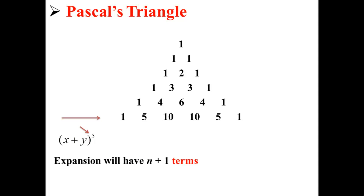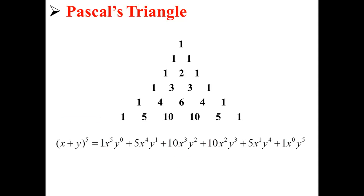Here we have x plus y to the fifth. That means we're going to start on the sixth row, because our expansion is going to have n plus one terms, where n is our degree. So here we write out the expansion of x plus y to the fifth. I'm just taking these values directly from Pascal's triangle.